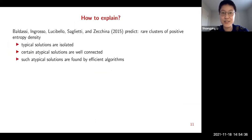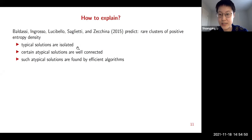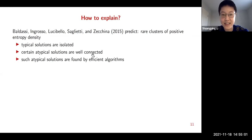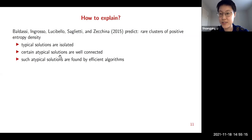This is exactly what the work I'm presenting today addresses. In 2015, a nice paper by Baldassi and co-authors predicted this is due to the existence of rare clusters of positive entropy density. Typical solutions are indeed isolated — that is proven — but certain atypical solutions are well-connected, and it is those atypical solutions that are found by efficient algorithms. Our work rigorously verifies this heuristic.